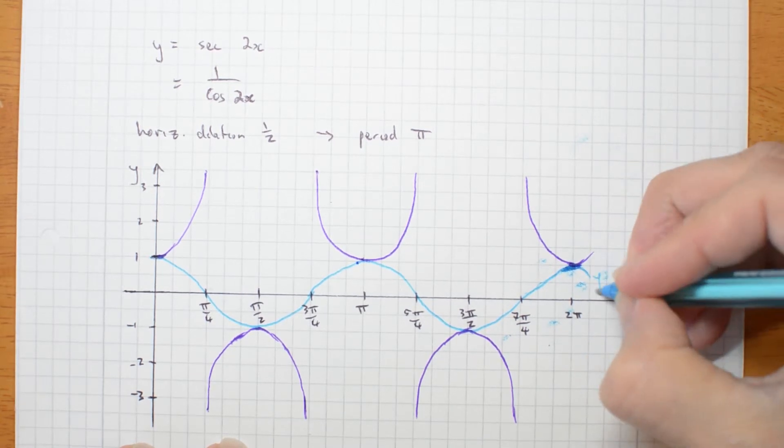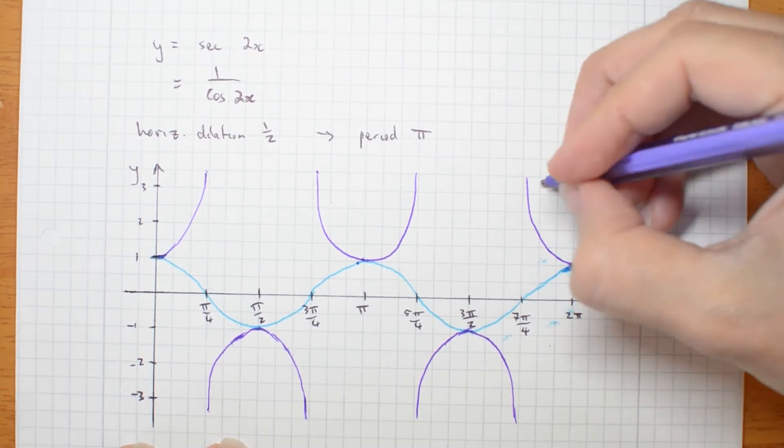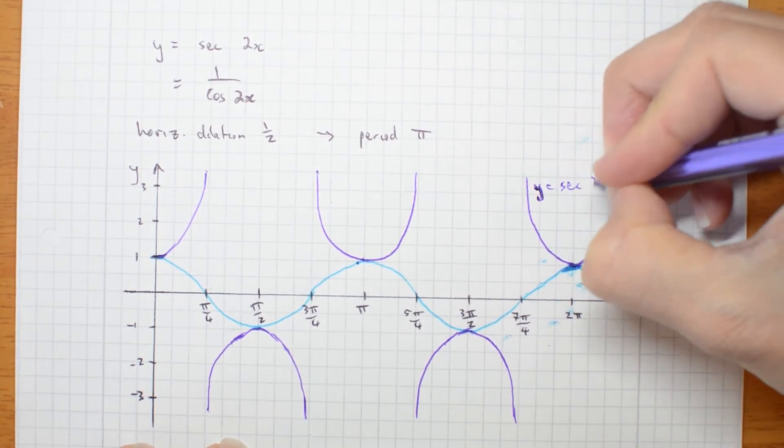Maybe I should label that. y equals cos 2x. And this one is y equals sec 2x.